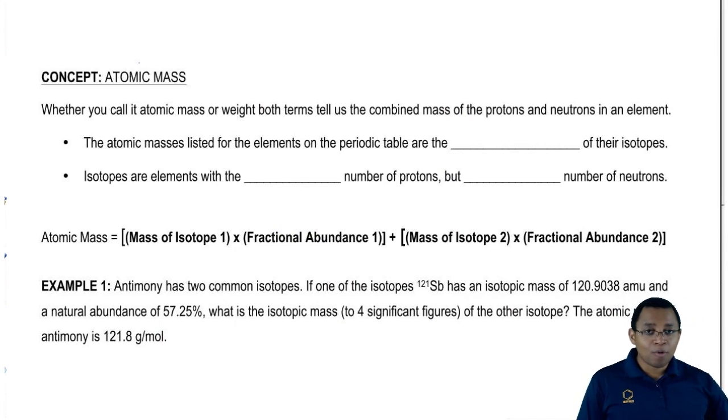Whether you call it atomic mass or mass number or atomic weight, we're going to say that all it tells us is the combined mass of the protons and the neutrons in our element.